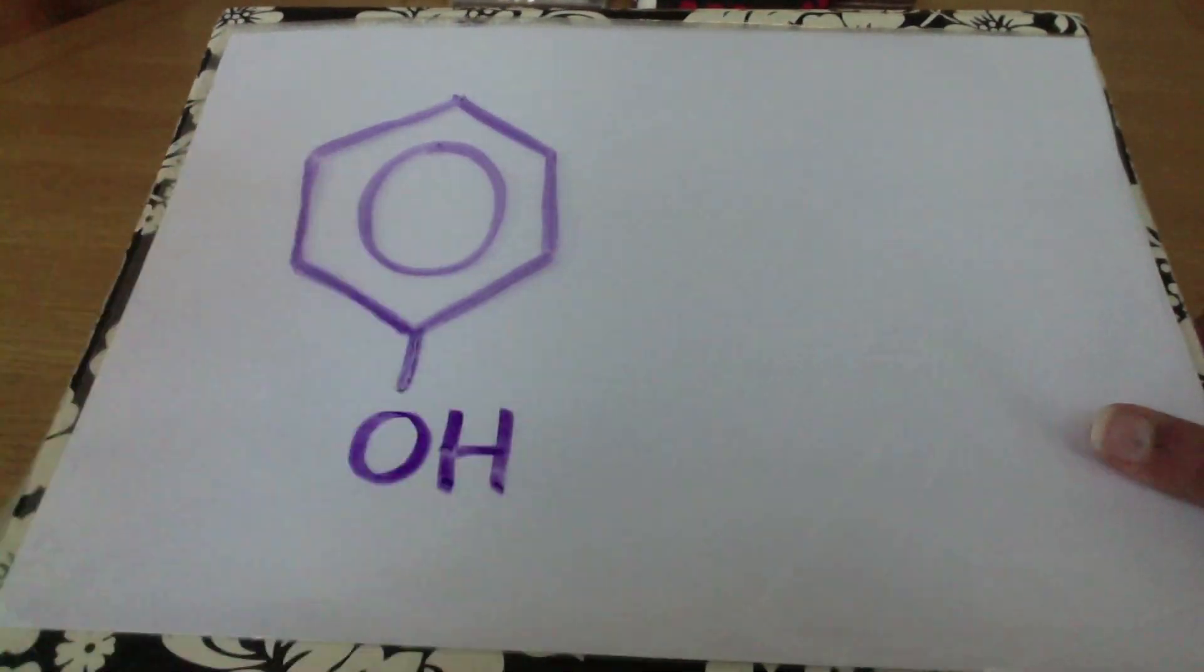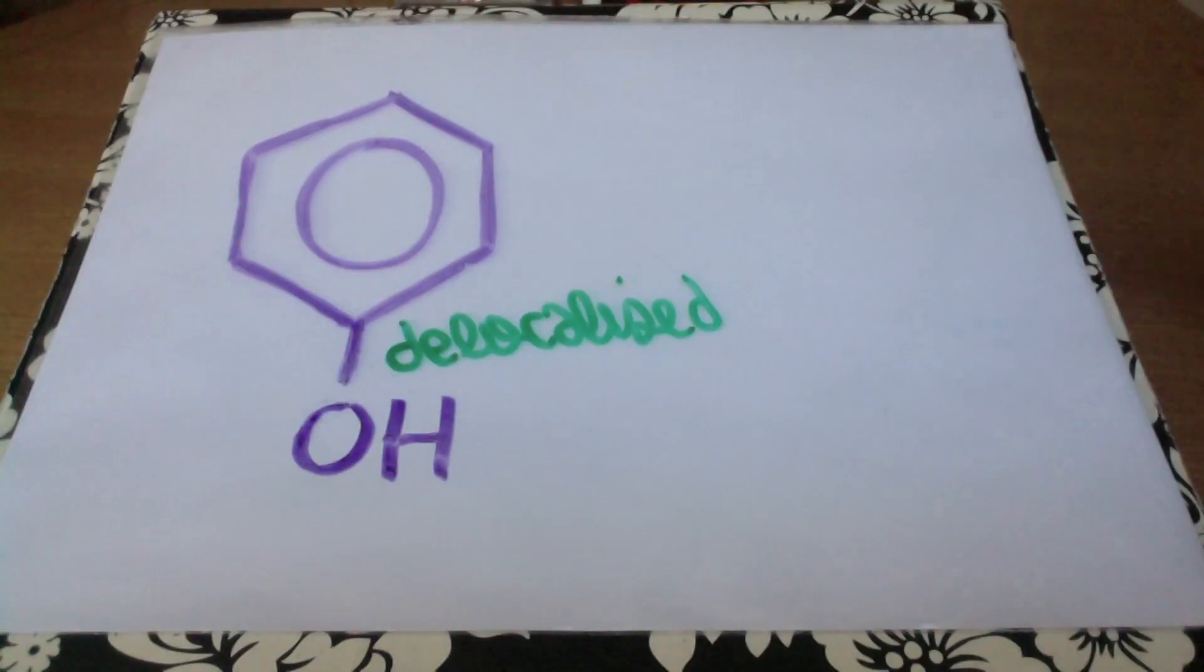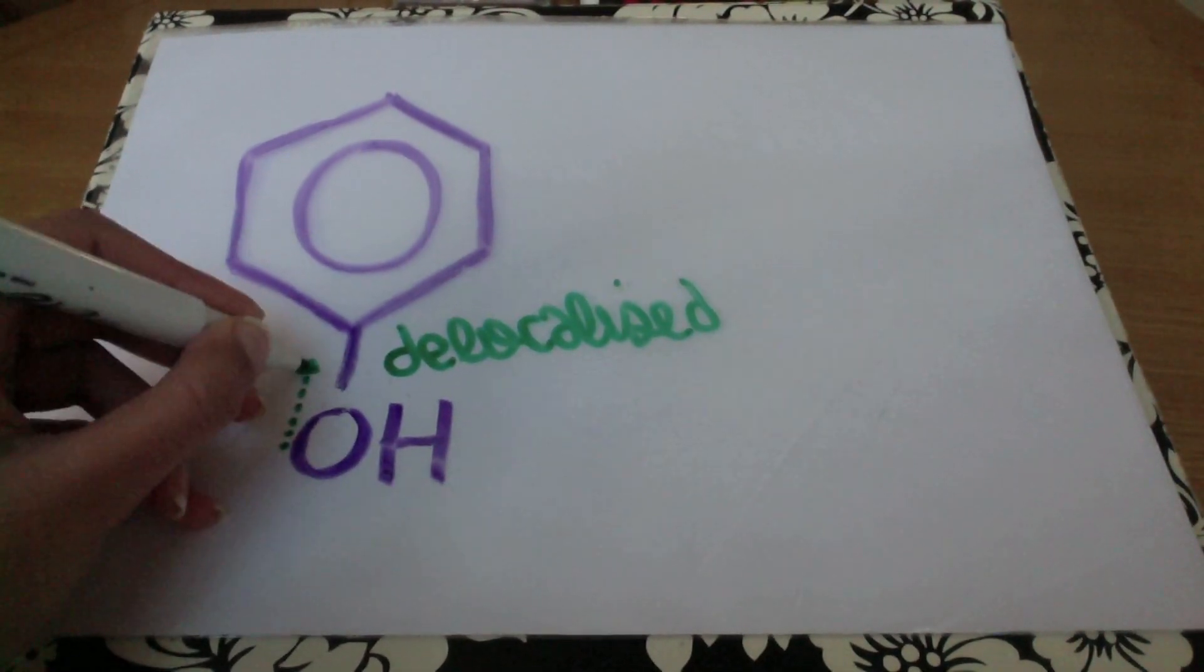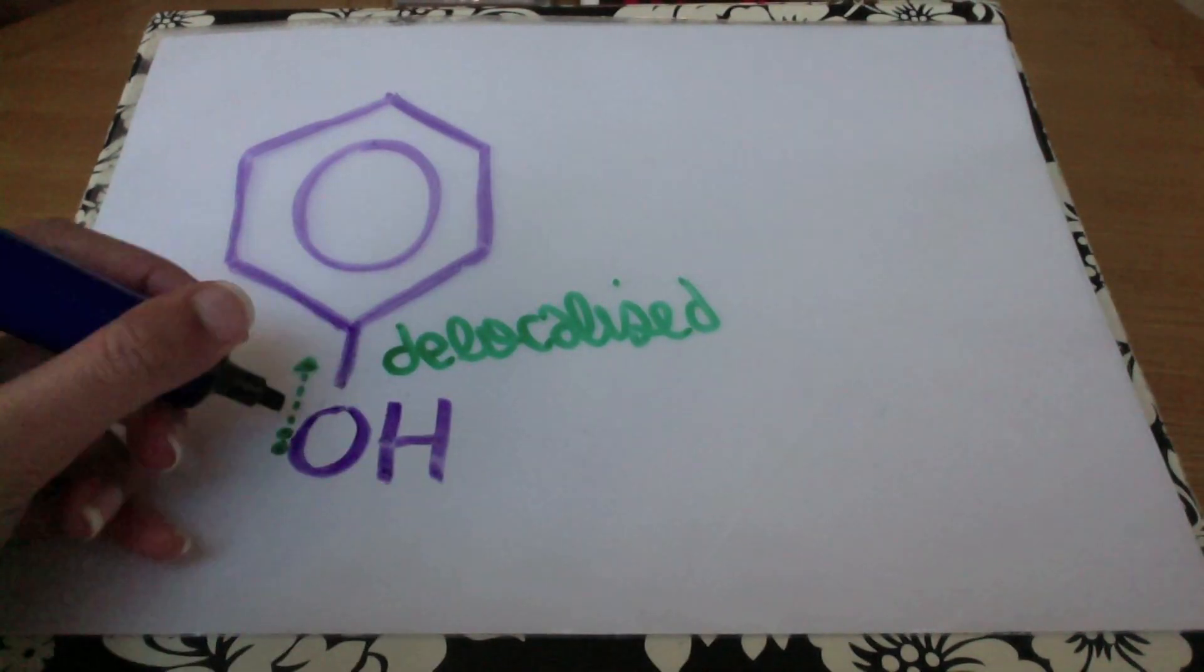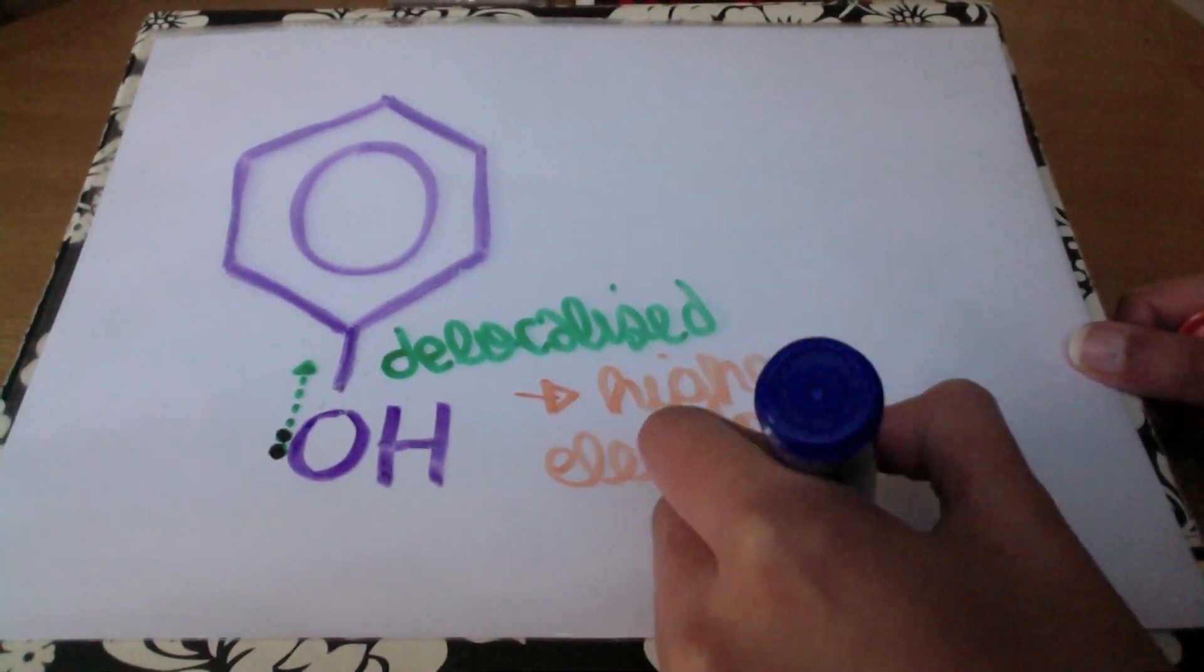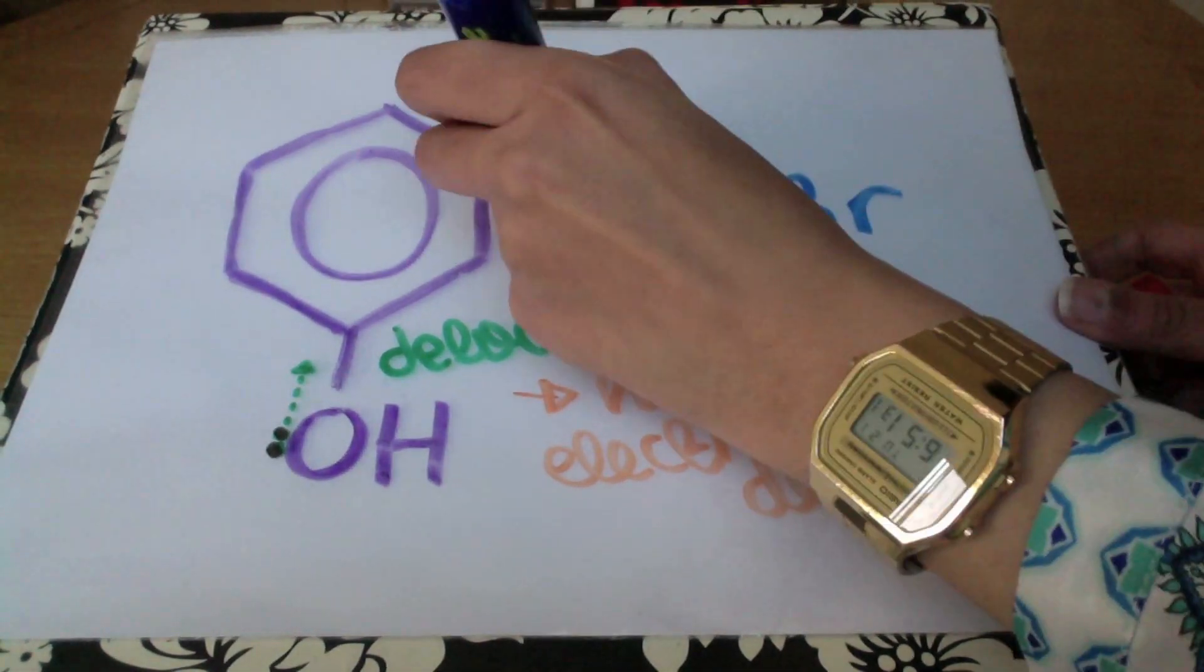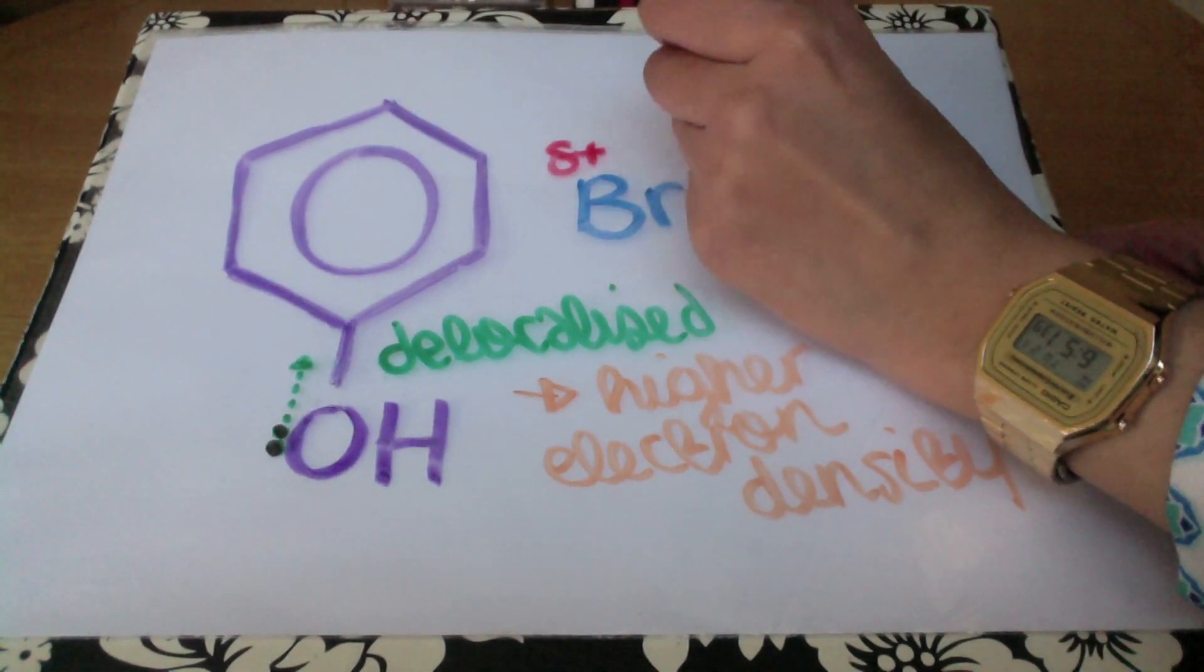In the case of phenol, obviously there isn't a double bond, but the hydroxyl group is electron donating. A lone pair of electrons on the oxygen atom is delocalized towards the ring. Because these electrons are delocalized towards the ring, there's more electrons in that area, so the electron density has increased and it's able to polarize the bromine molecule.